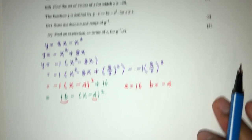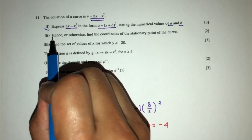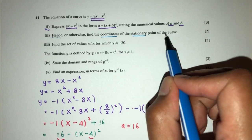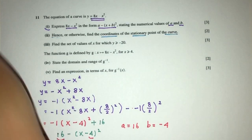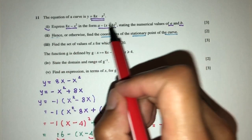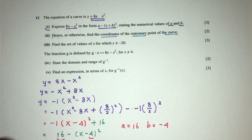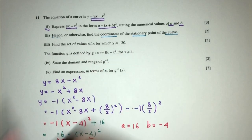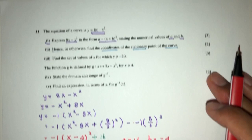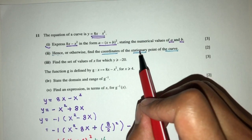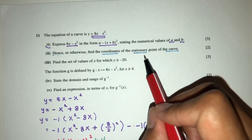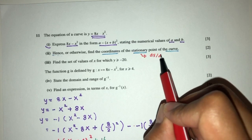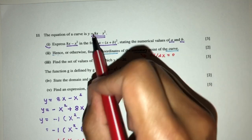For part 2, we need to find the coordinates of the stationary point of the curve. The word 'hence' means we should use the previous result, but let's first see how to do it otherwise. At a stationary point, dy/dx must equal 0, so let's find that.